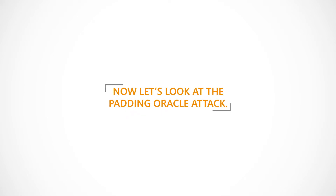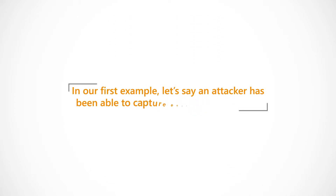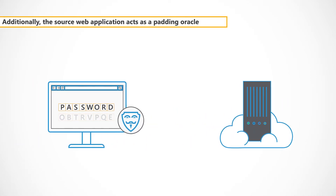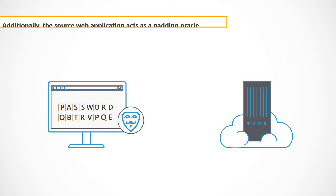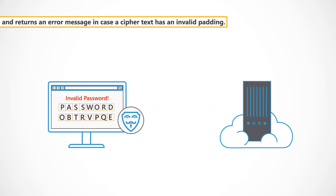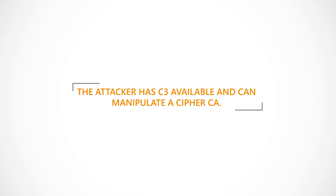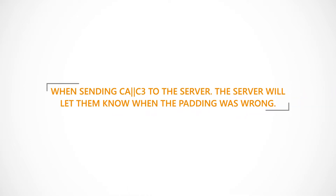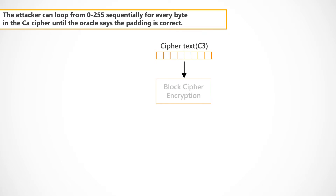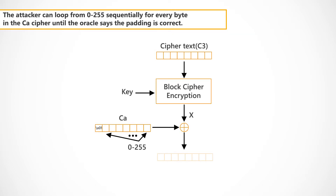Now, let's look at the Padding Oracle attack. In our first example, let's say an attacker has been able to capture encrypted messages. Additionally, the source web application acts as a Padding Oracle and returns an error message in case a ciphertext has an invalid padding. The attacker has C3 available and can manipulate a cipher CA. When sending CA or C3 to the server, the server will let them know when the padding was wrong. The attacker can loop from 0 to 255 sequentially for every byte in the CA cipher until the Oracle says the padding is correct.